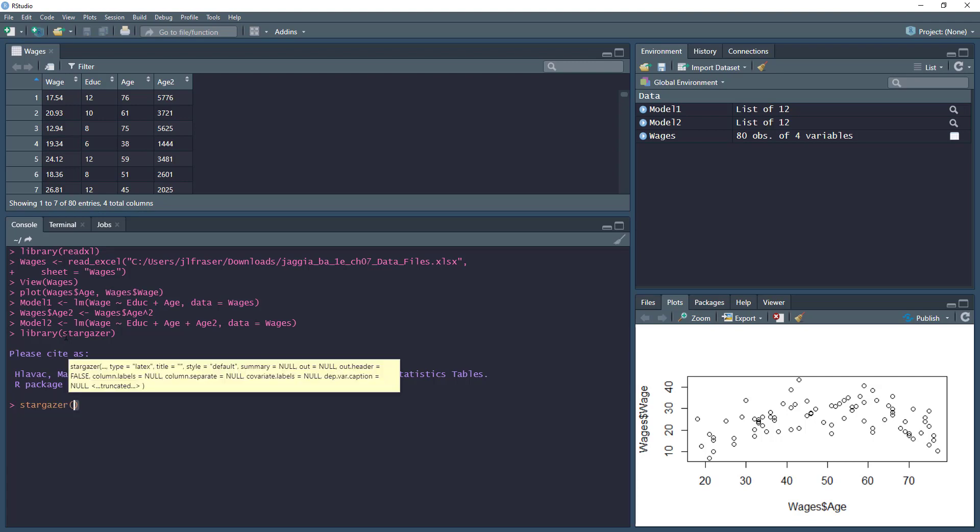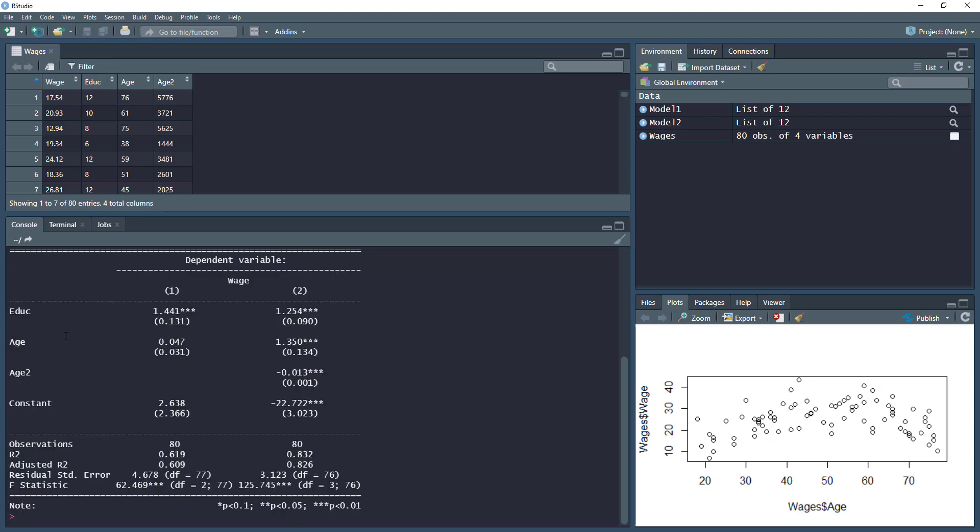I can use the function stargazer, model one, model two, and the type is going to be text.